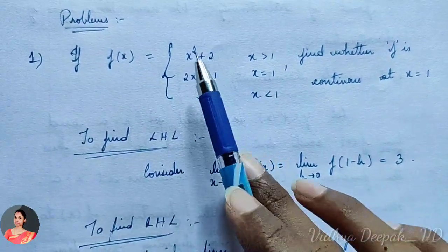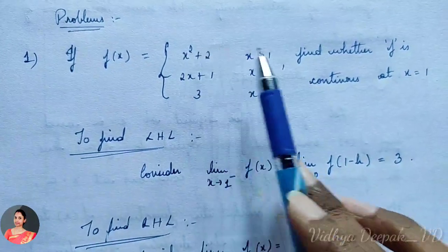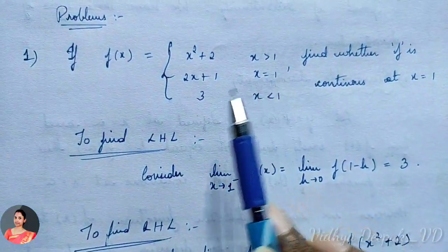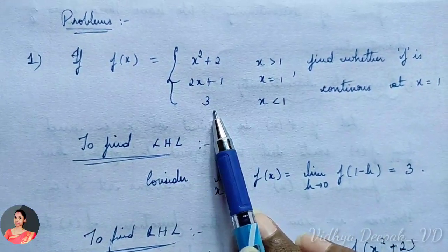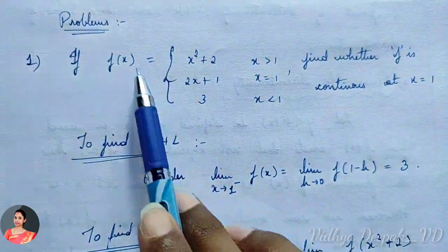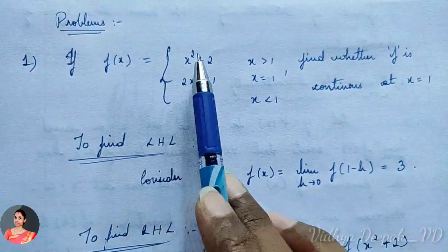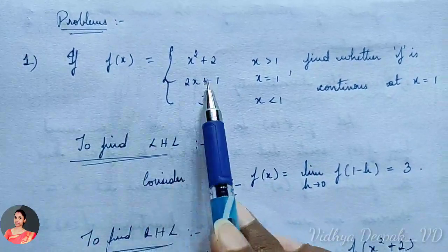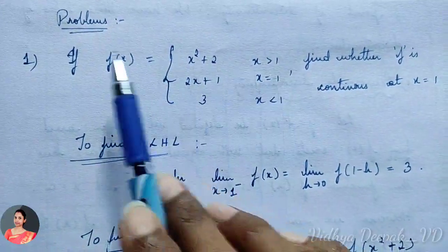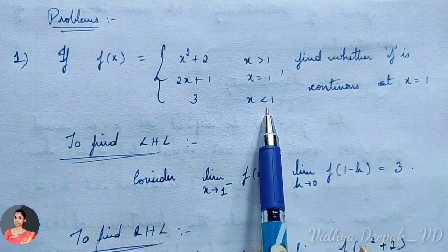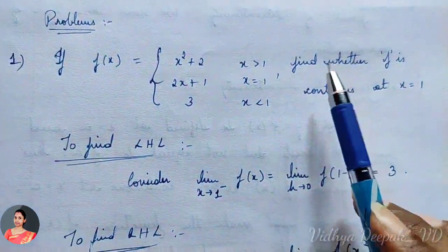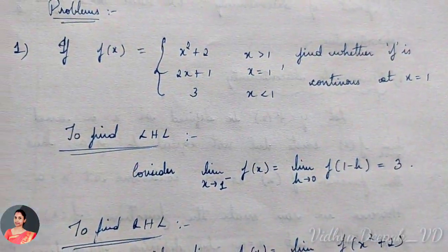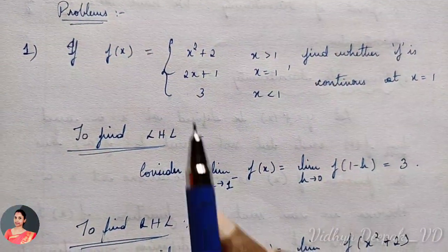We have a piecewise function: f(x) = x² + 2 when x > 1; f(x) = 2x + 1 when x = 1; and f(x) = 3 when x < 1. We have to find whether f is continuous at x = 1.